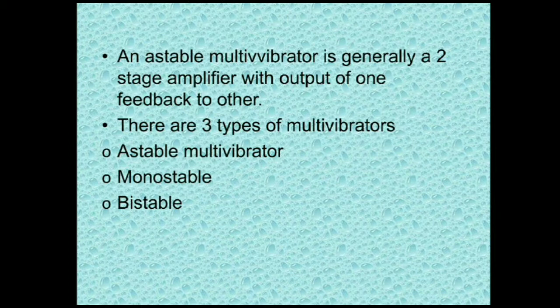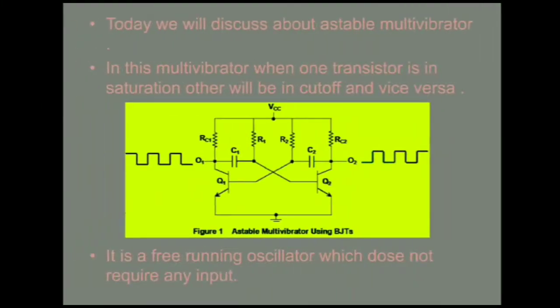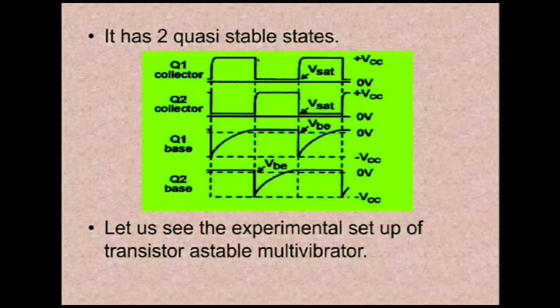There are three types of multivibrators: astable multivibrator, monostable multivibrator, and bistable multivibrator. Today we will discuss about the astable multivibrator. In this multivibrator, when one transistor is in saturation the other will be in cutoff, and vice versa. It is a free running oscillator which does not require any input. It has two quasi-stable states.